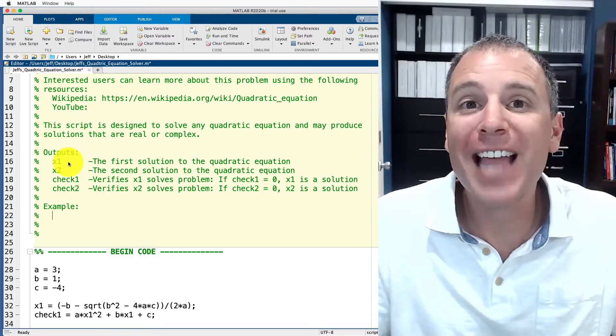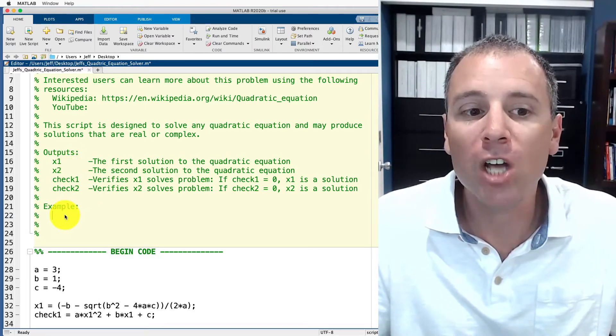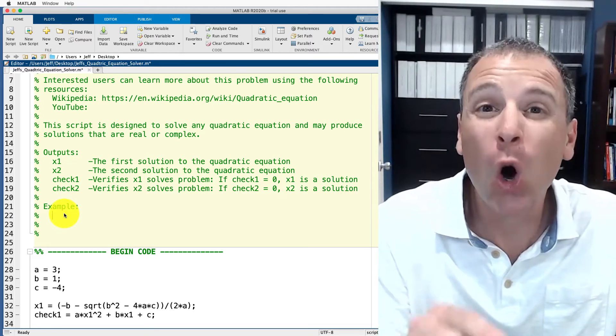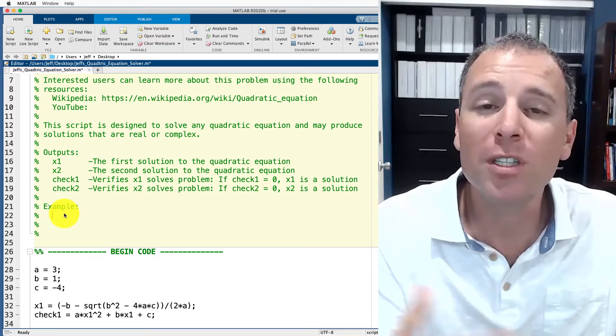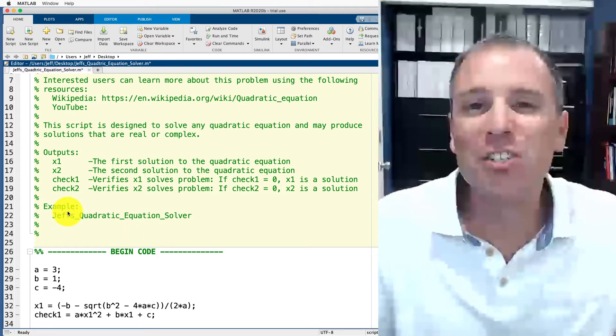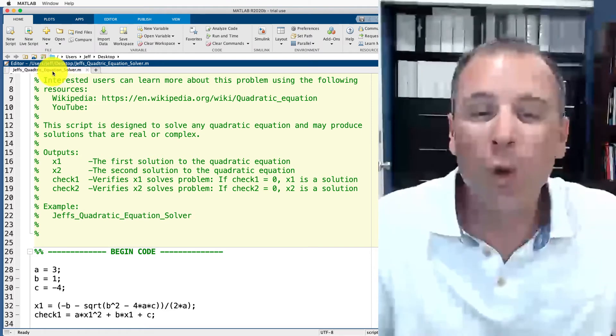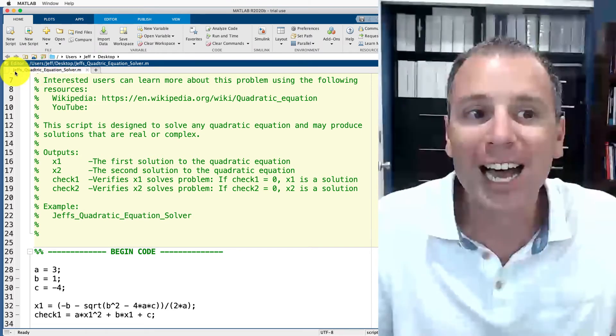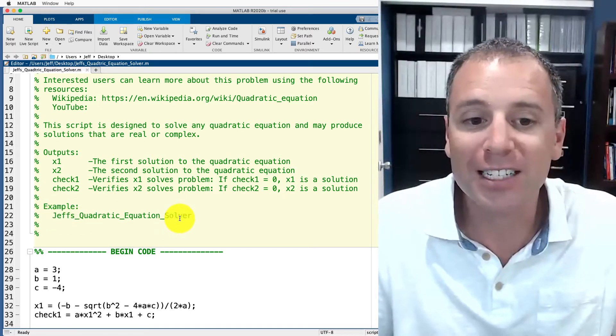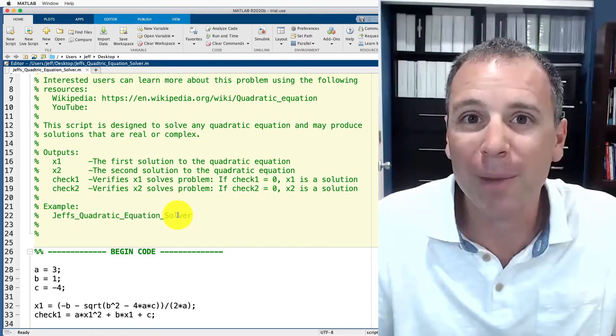After we've highlighted and documented the output that our code produces we're going to show examples of how other users might call this code, might use this code in the command line or in other script files. In this case it's a script file so there's only one way to call it in the command line which is to type the title of the script file in and push enter. In other words this is an example of how to call this in the command line.